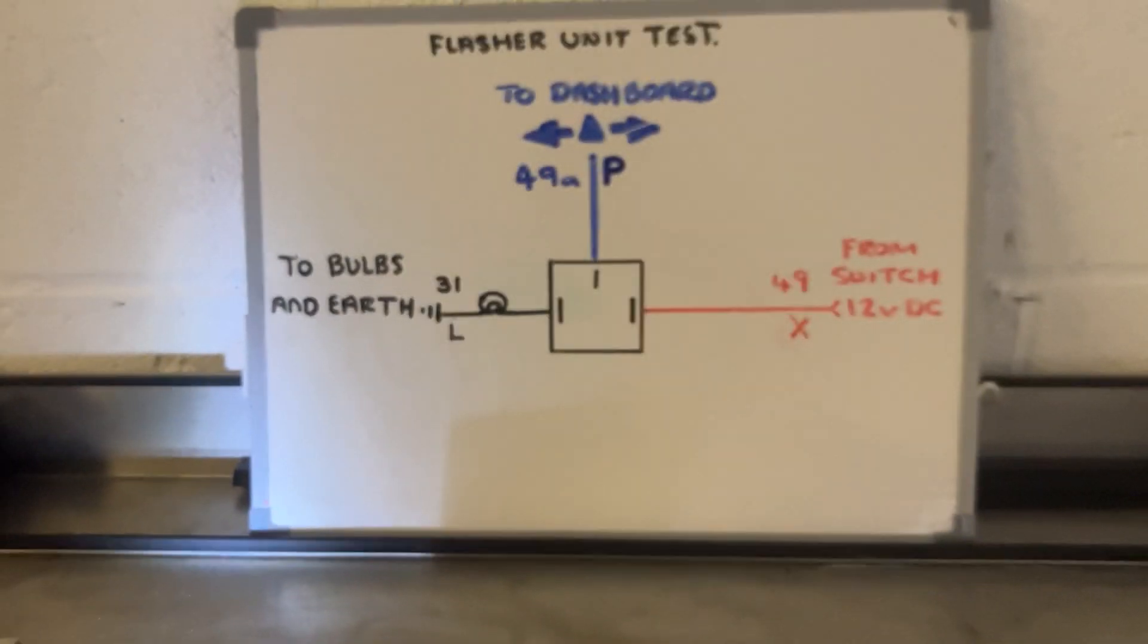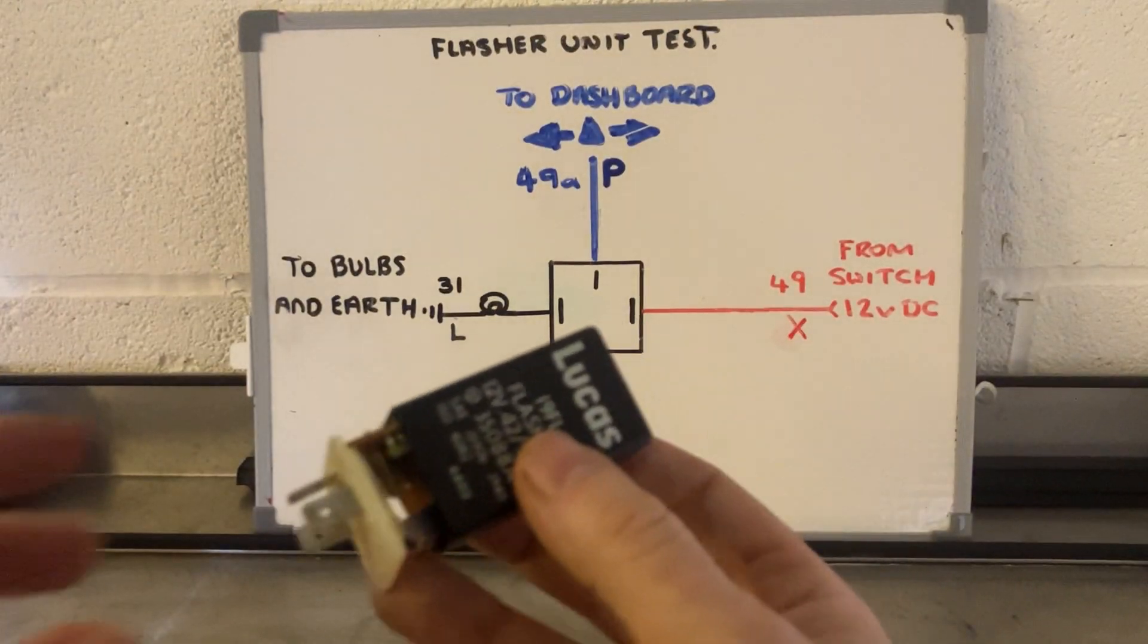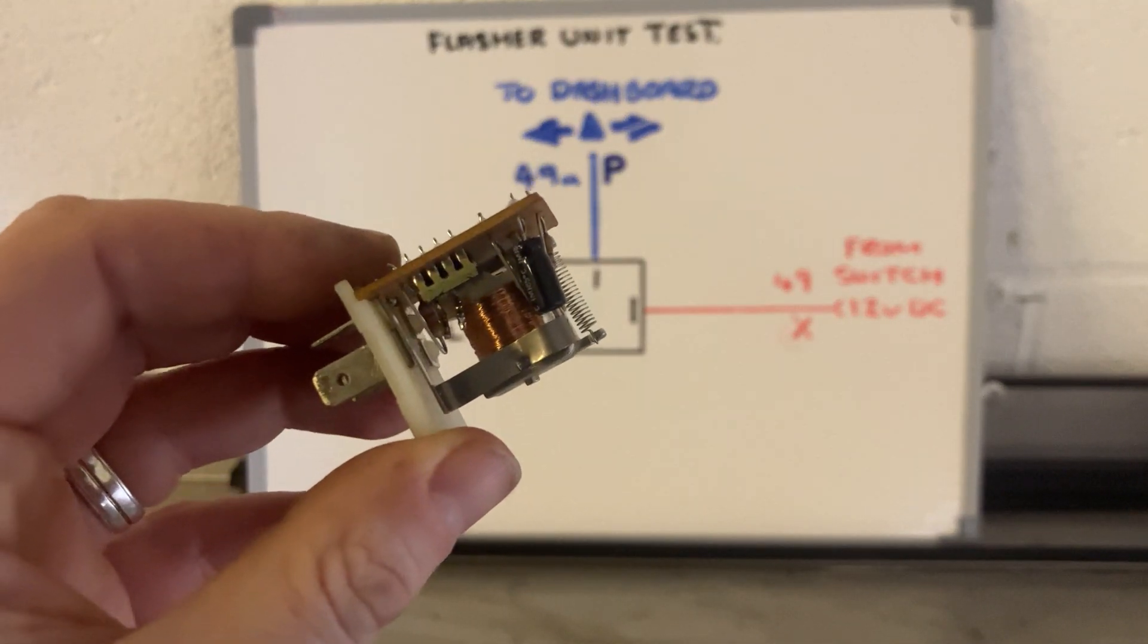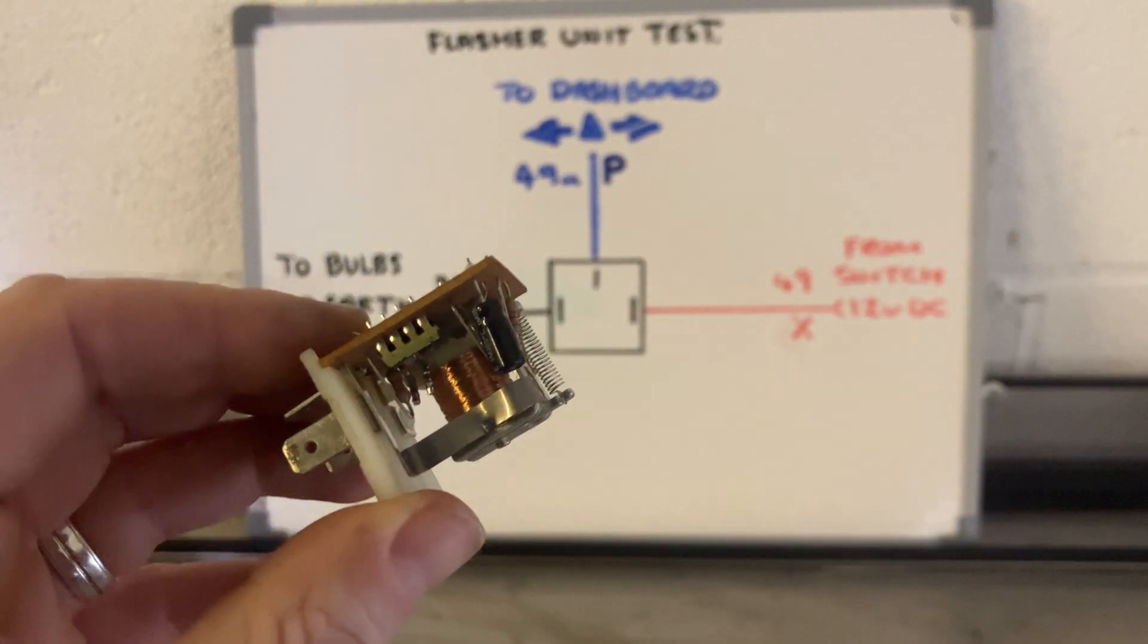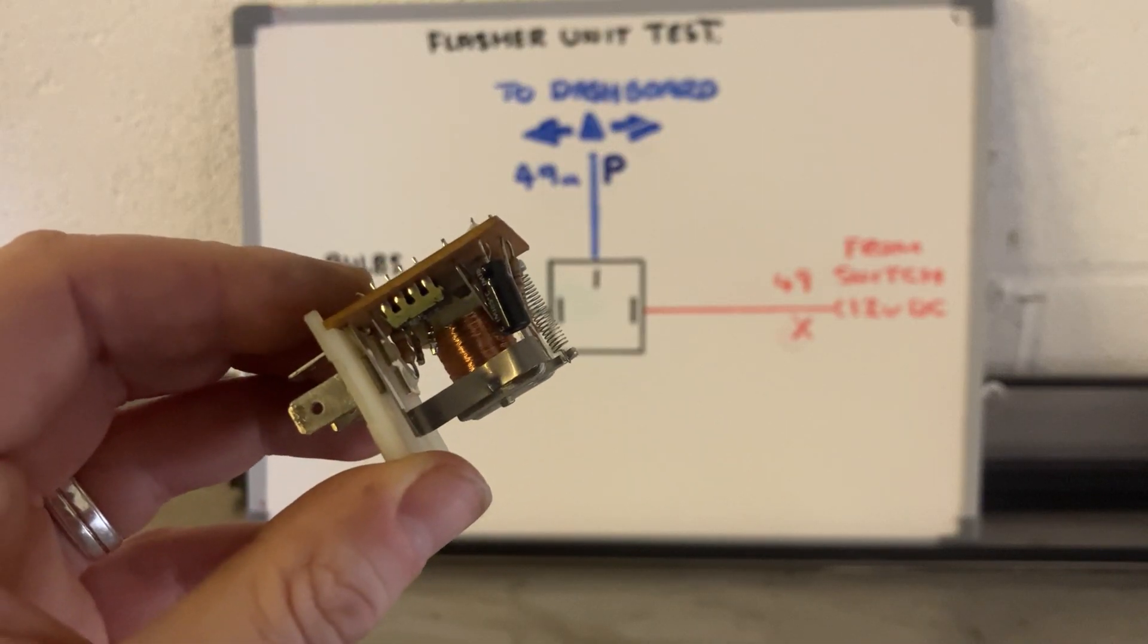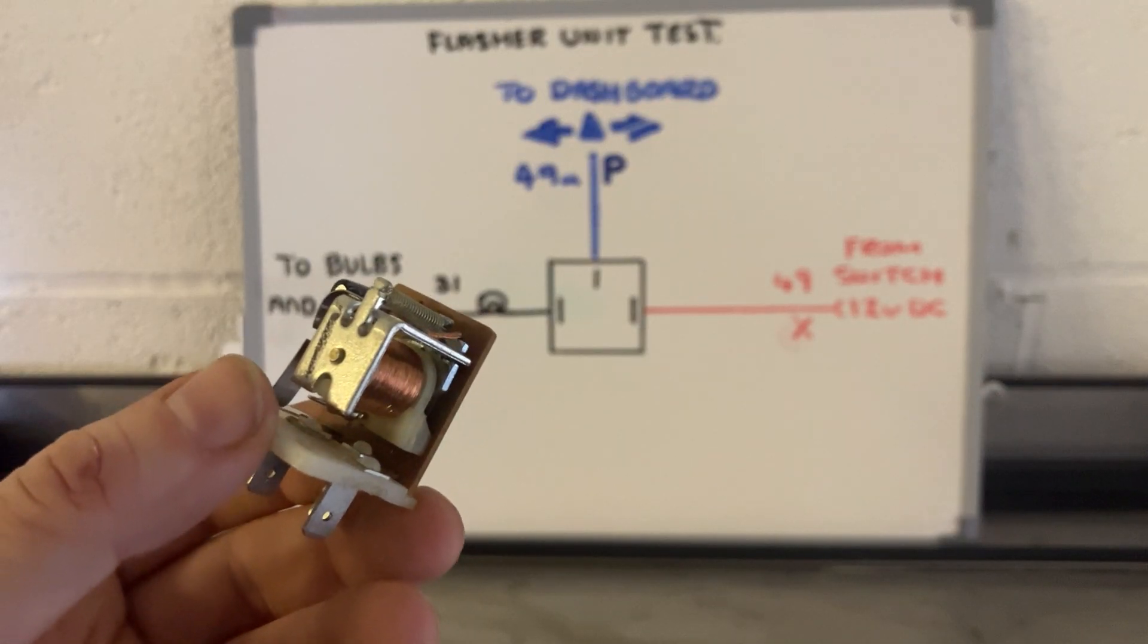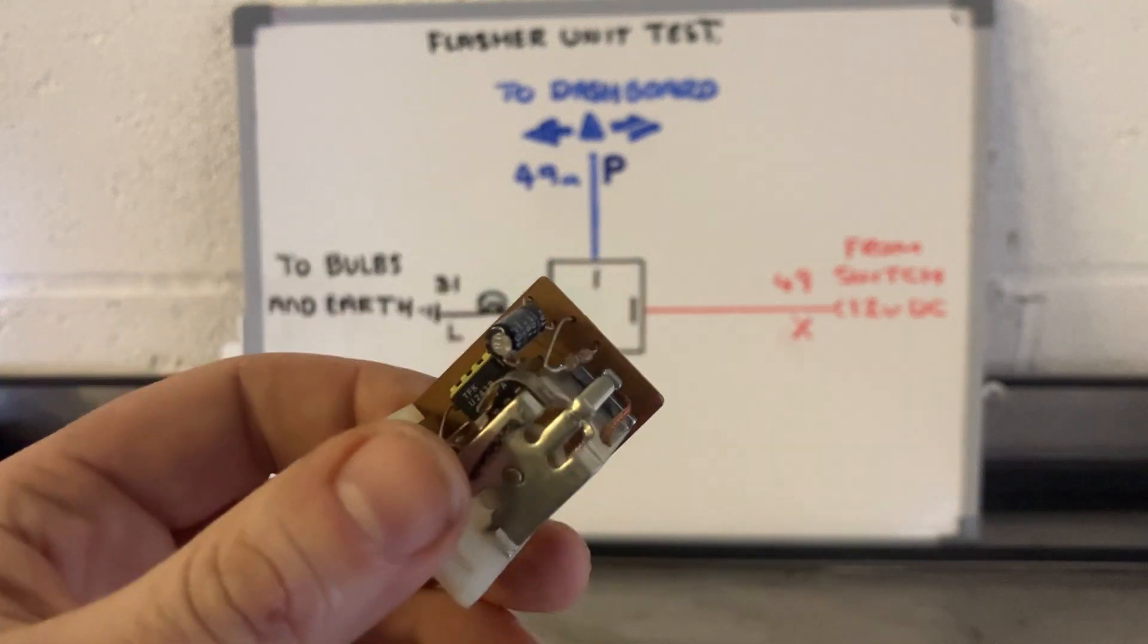Just show you the modern version. So, this is a 1990s flasher relay. And inside now, you can see it's being computerized. So, this will use a relay and a condenser. A little black element here to hold and release that charge. Again, around about 60 to 120 times per minute. So, it's a far more accurate system than using heating element and biometallic strip. I hope that makes sense. And I'll see you in the next one.